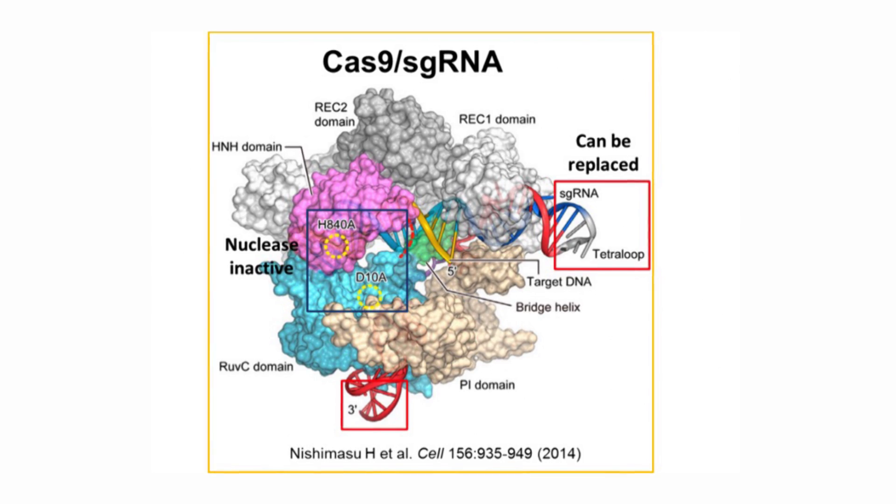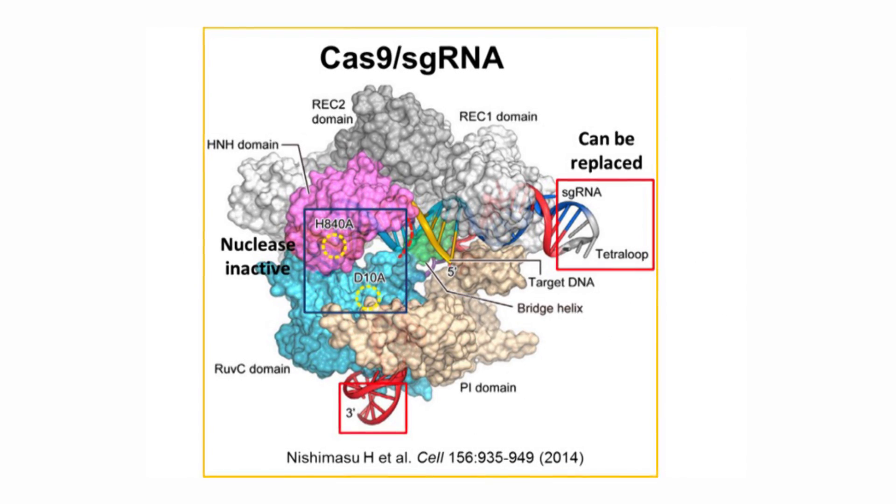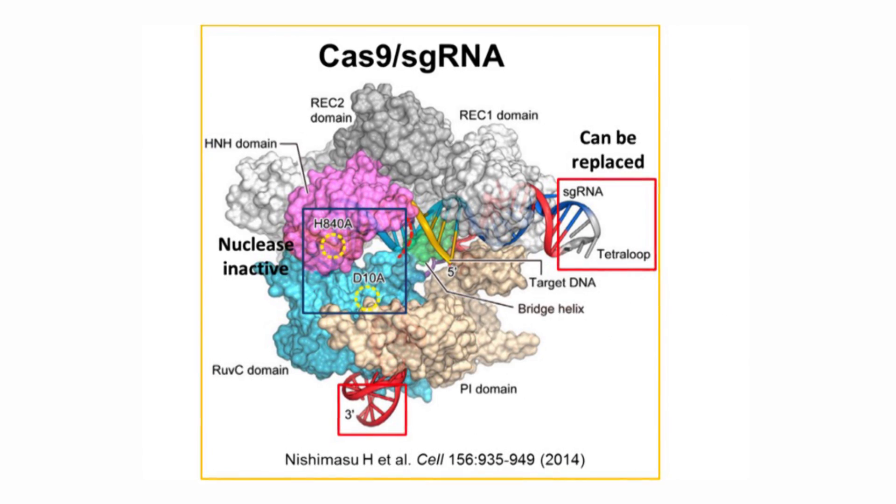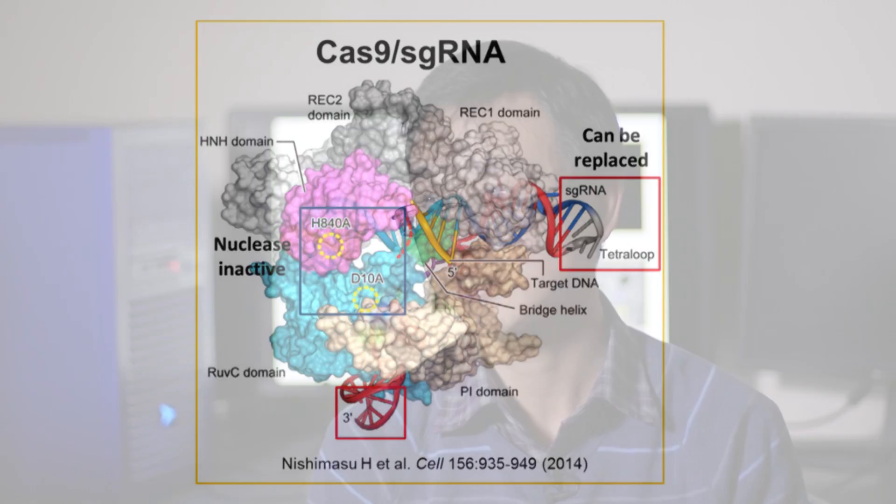Most people are using CRISPR for editing genomes, but we're using CRISPR to label DNA and track the movement of DNA in live cells. To label DNA, we need to make Cas9 mutations, make it nuclease inactive, so it can only bind DNA but not cut it.